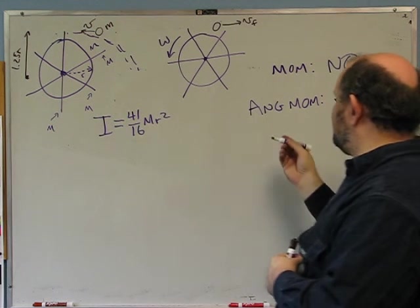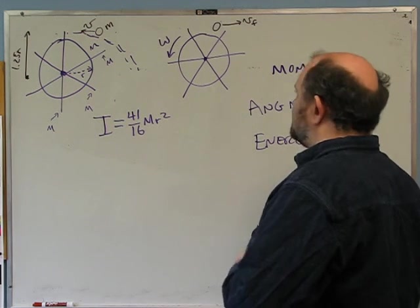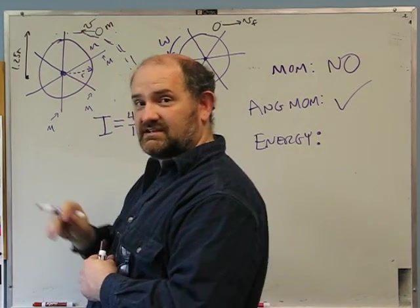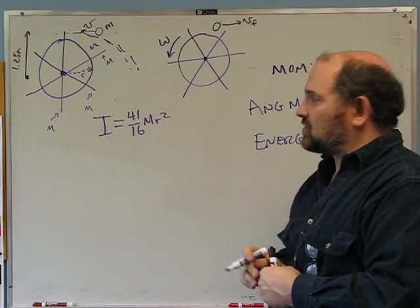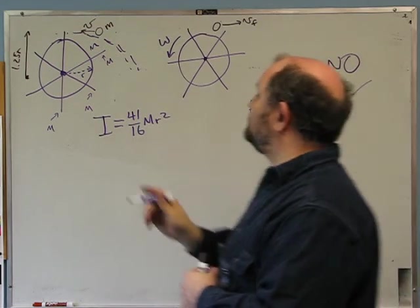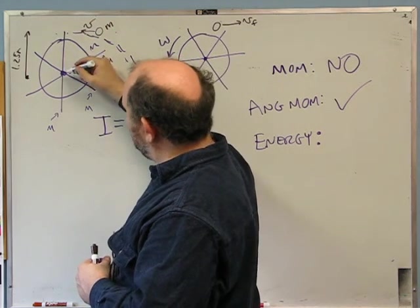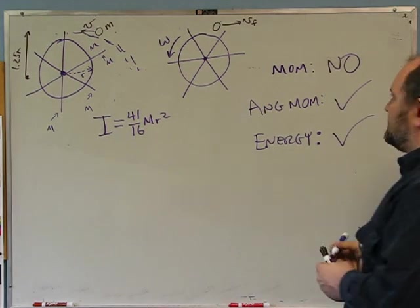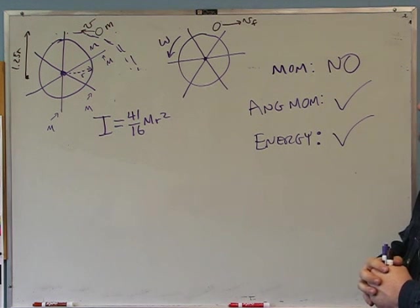For energy: it is an elastic collision, so no energy is converted to heat. The center of the wheel doesn't move, so the axle force does no work. Gravity is perpendicular to the ball's motion, so it also does no work. Therefore energy is conserved. Summary: momentum is NOT conserved, but angular momentum and energy ARE conserved.